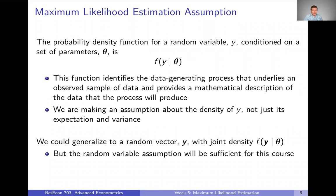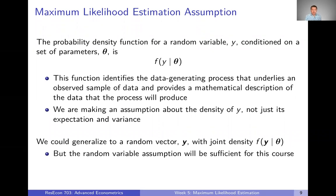We're going to start with a strong assumption: that the probability density function for a random variable y, conditioned on a set of parameters theta — which could be one or multiple parameters in that vector theta — is defined by this function f. We're saying, at the start of our estimation, this is the distribution, this is the density function of our data. It can be conditional on these parameters theta that we don't know yet, but we're assuming we know the underlying shape even if we don't know the actual parameters that fully describe that shape.